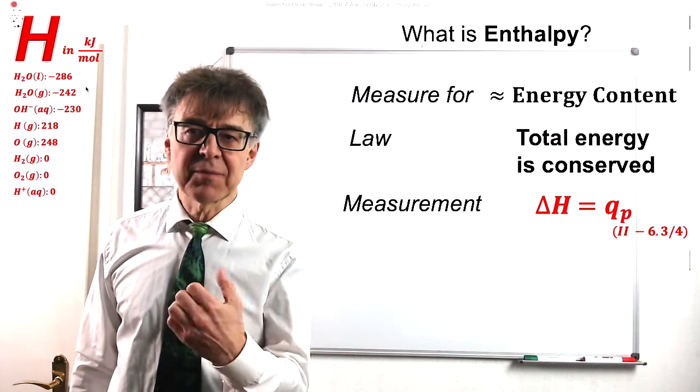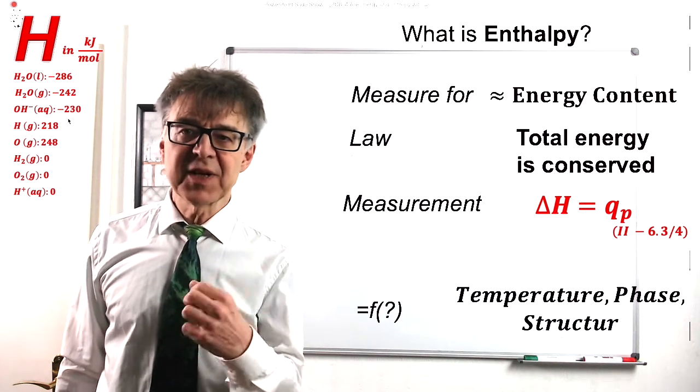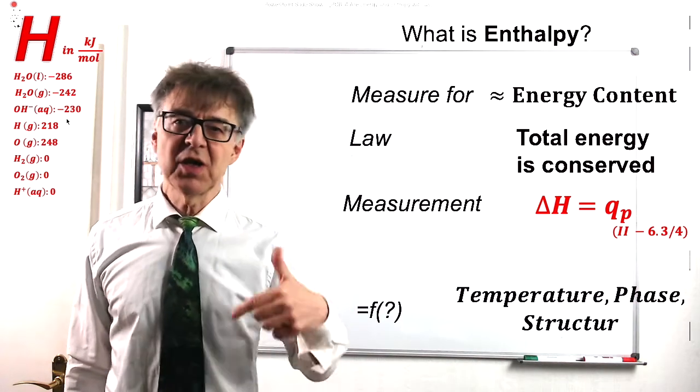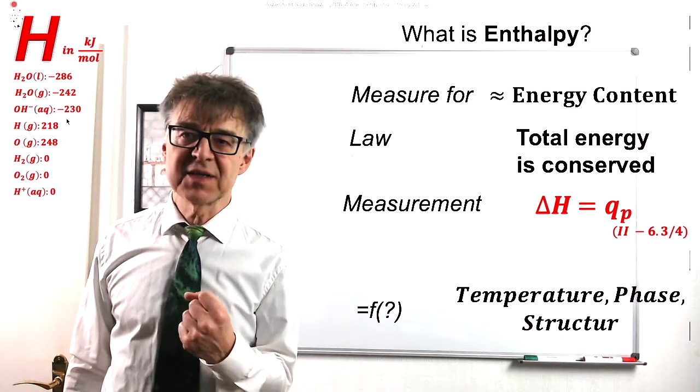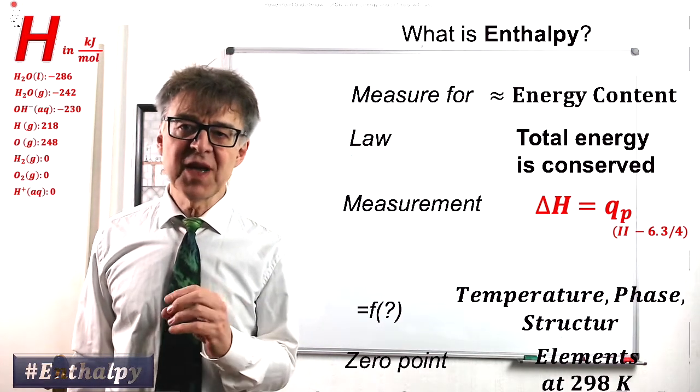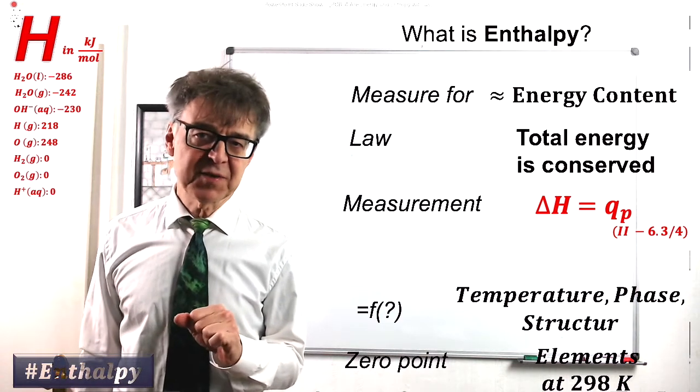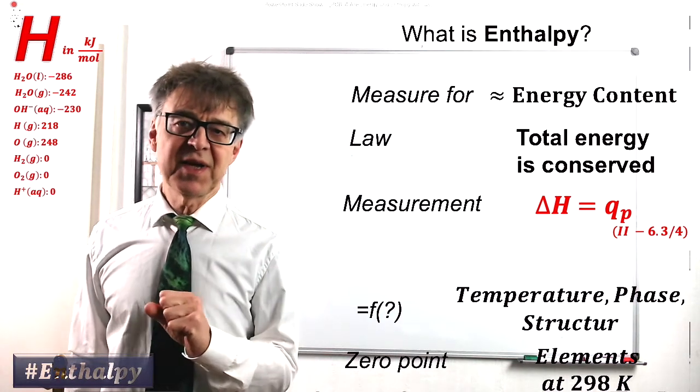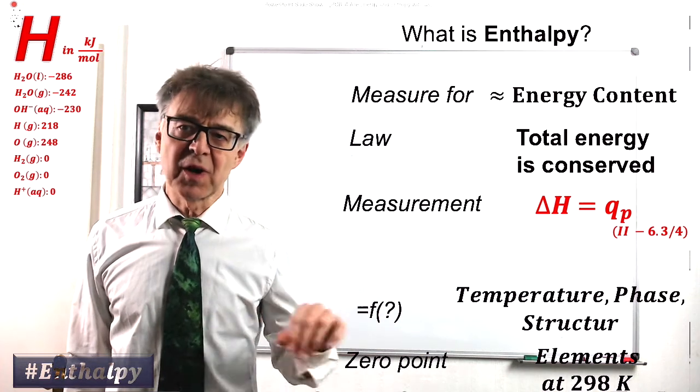Whenever isobaric heat occurs, we change enthalpy. So, enthalpy clearly depends on temperature, on the phase and on chemical structure. There is no natural zero of enthalpy, but all elements at 25 degrees Celsius were arbitrarily defined to have zero enthalpy.